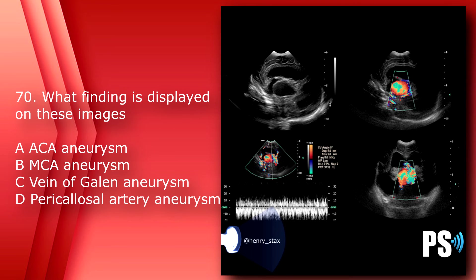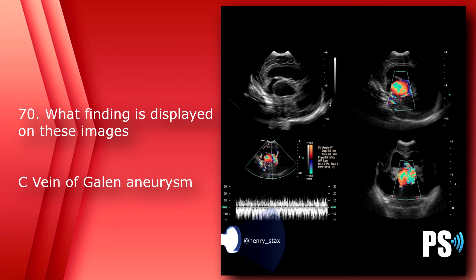Number 70: What finding is displayed on these images? A) anterior cerebral artery aneurysm, B) middle cerebral artery aneurysm, C) vein of Galen aneurysm, or D) pericallosal artery aneurysm. The answer is C, vein of Galen aneurysm.